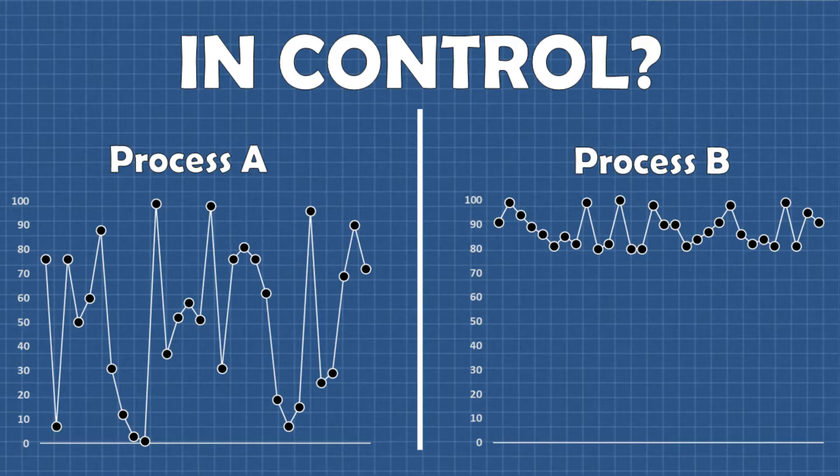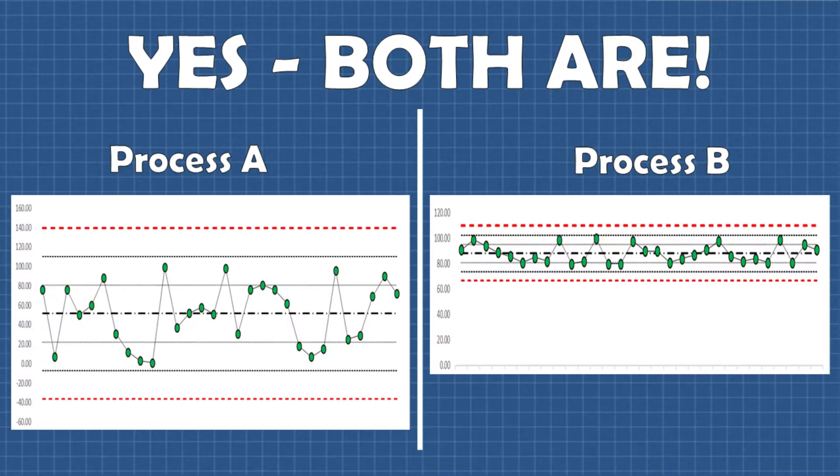So knowing what we know now about control charting let's go back to the question that I posed at the beginning of this video. Are these processes in control? And the answer is yes both of them are in control. I know that because I actually put these to the test with my control charting template that I built in Excel which I'll link to that video in the description and when I did that all the data points are in control. In other words the variation is all common cause or just noise.